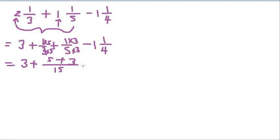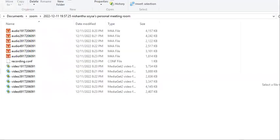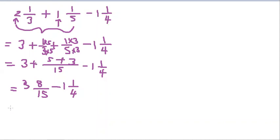And 1 1/4, then 3 we can write as 3 and 5 plus 3 over 15 minus 1 1/4. Now we can simplify the integer first. 3 minus 1 is 2, then 8/15 minus 1/4.